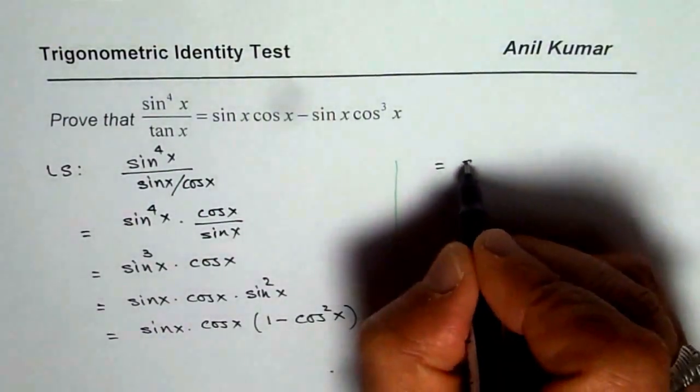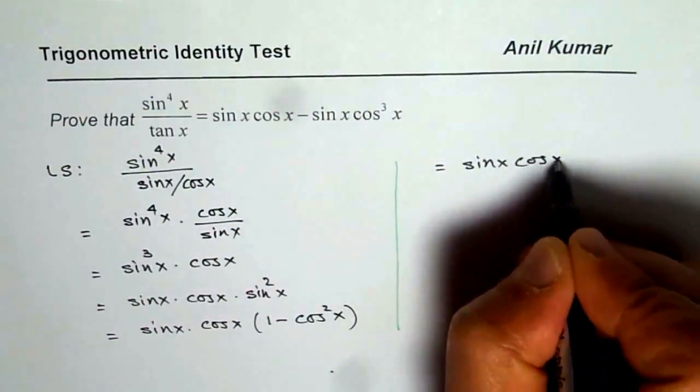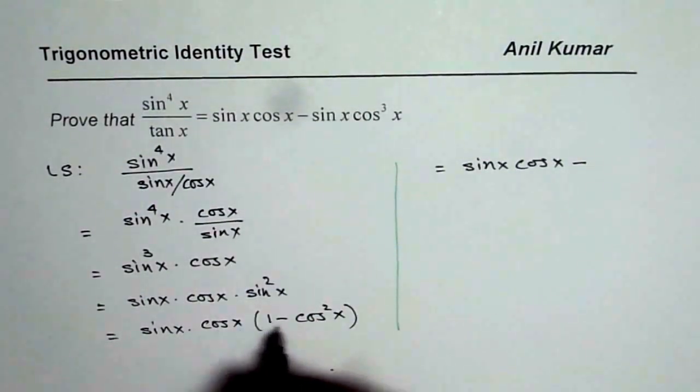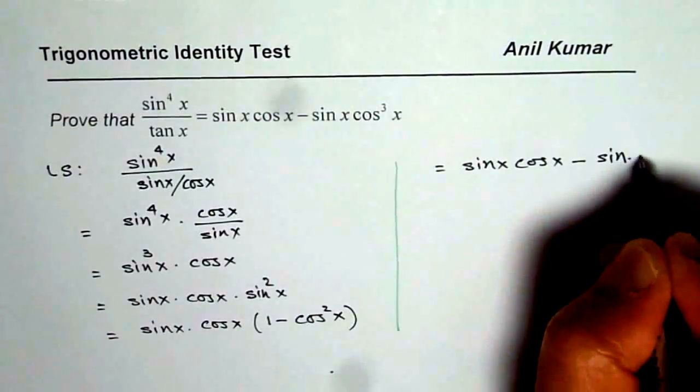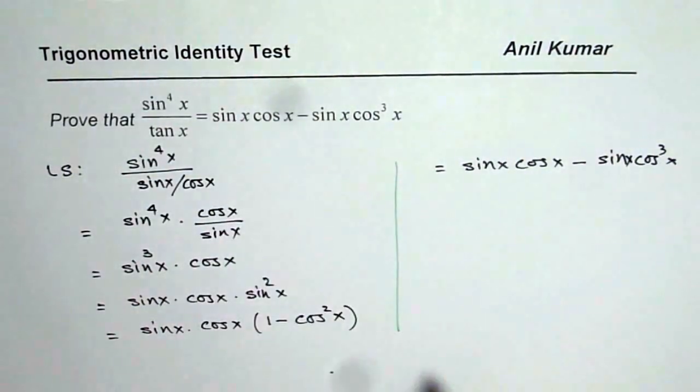Sin x cos x is the first term. Sin x cos x and minus, when you multiply this you get cos x times cos square x as cos cube x. So we have sin x cos cube x, which is our right side.